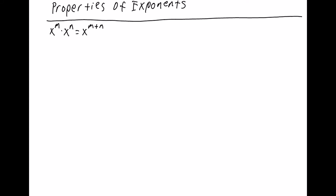So we're going to review the properties of exponents. First, when you're multiplying two variables with the same base — that means the number being raised to exponents is the same, so they're both x's. If one is one variable and the other is a different variable, then you can't combine them. So we have x to the m times x to the n. When you multiply variables, you add the exponents. An example would be x to the 8 times x to the 3 is x to the 11.